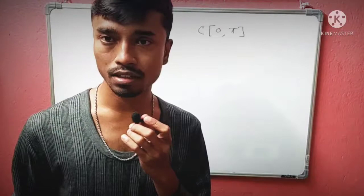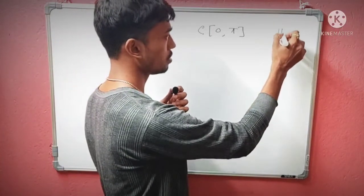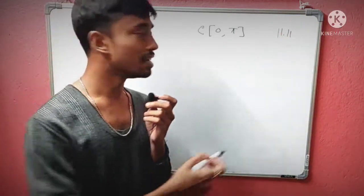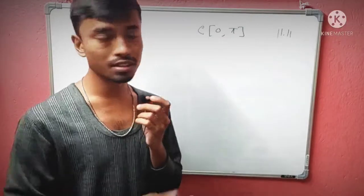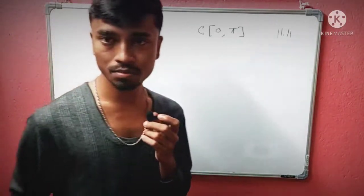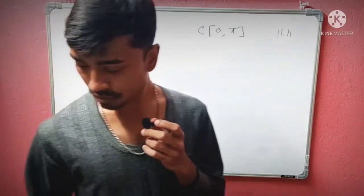This space C[0,π] is the space of all continuous functions with the default norm, which is the supremum norm. With this supremum norm, C[0,π] is generally a Banach space—a complete normed linear space.